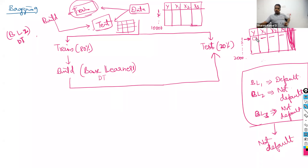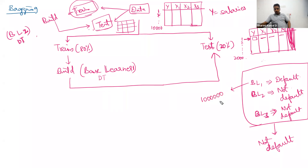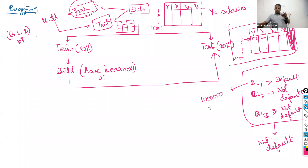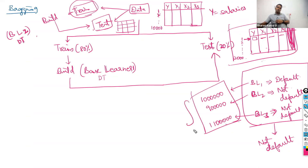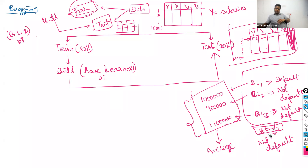If the output variable is salaries of people — a numeric output — base learner one might predict 10 lakhs per annum, base learner two might predict 9 lakhs, base learner three might predict 11 lakhs. You combine results by taking an average for numeric output. For categorical output, you use majority voting or hard voting.